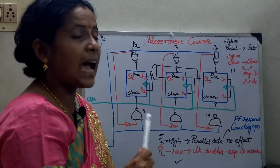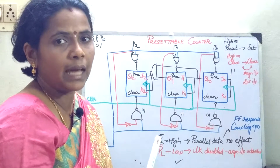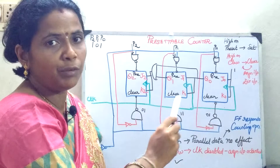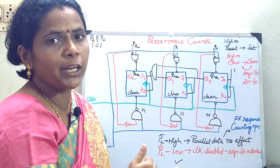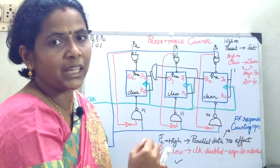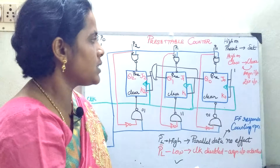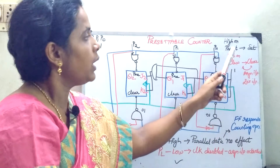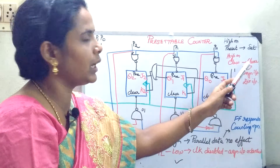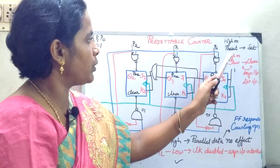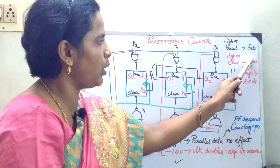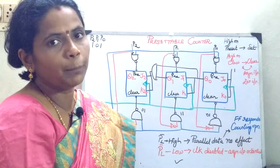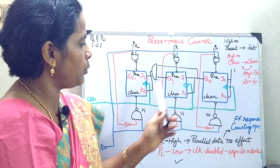There is a concept called the asynchronous input or direct input. When considering the circuit configuration, you have many flip-flops. Whenever any operation is performed, initially the flip-flops should be reset. You cannot check each flip-flop's previous condition individually. That is where the asynchronous input comes in. If you set a high on the preset signal, it sets the flip-flop. If you keep high on the clear signal, it clears the flip-flop. This condition is called the asynchronous input or direct input condition.